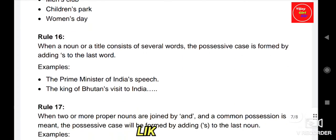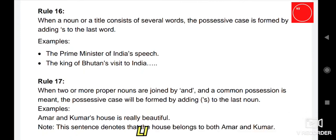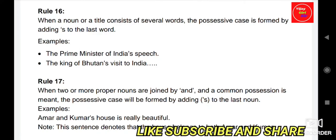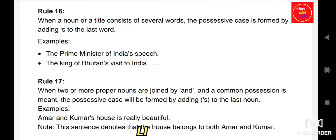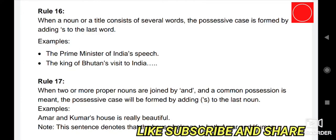Rule 16: When a noun or title consists of several words, the possessive case is formed by adding apostrophe S to the last word. For example, 'the prime minister of India's speech' — we add apostrophe S to India, not to prime or minister. 'The king of Bhutan's visit to India.'